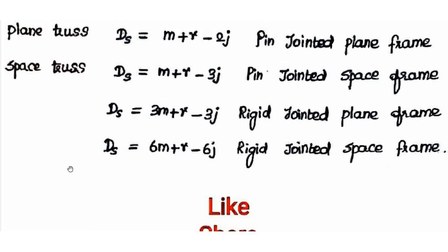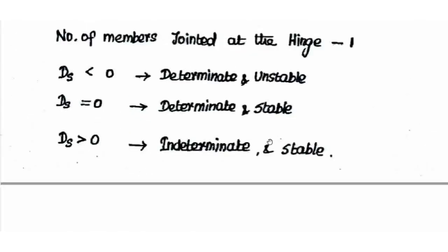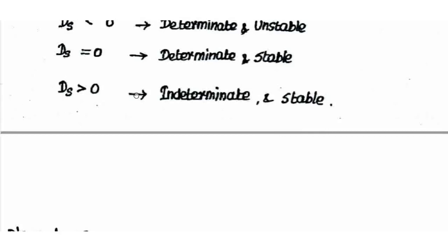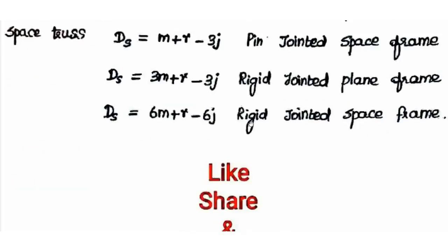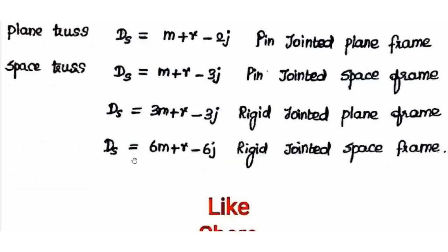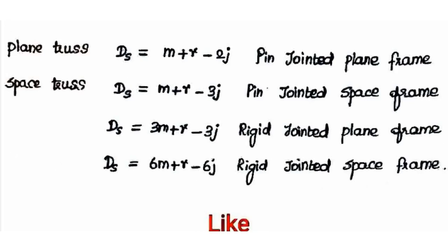6M + R − 6J is the direct formula for a rigid-jointed space frame — this is a repeated MCQ formula. If the degree of static determinacy is greater than 0, the structure is stable and indeterminate. If equal to 0, it is stable and determinate. These four formulas are important and frequently asked in MCQs.